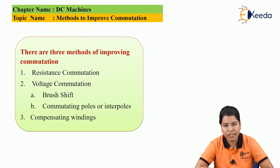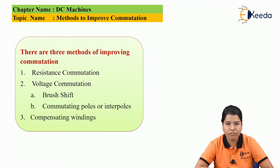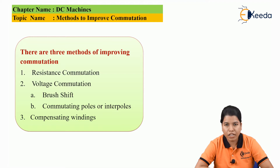There are two methods by which this can be done. The first is by brush shift. In brush shift, when armature reaction takes place, the total flux gets distorted. The MNA has the tendency to remain perpendicular to the resultant flux. Hence, according to the distortion of the resultant flux, the magnetically neutral axis rotates. Since the brushes are always placed on the MNA, as per the rotation of the magnetically neutral axis, the brush also rotates.